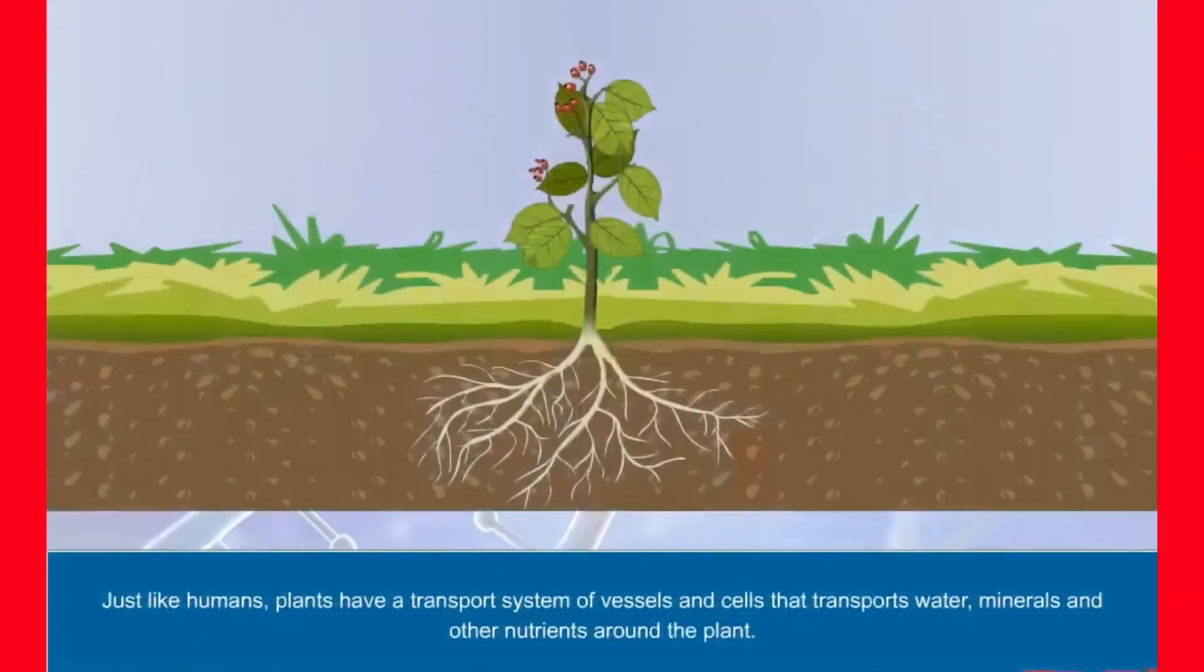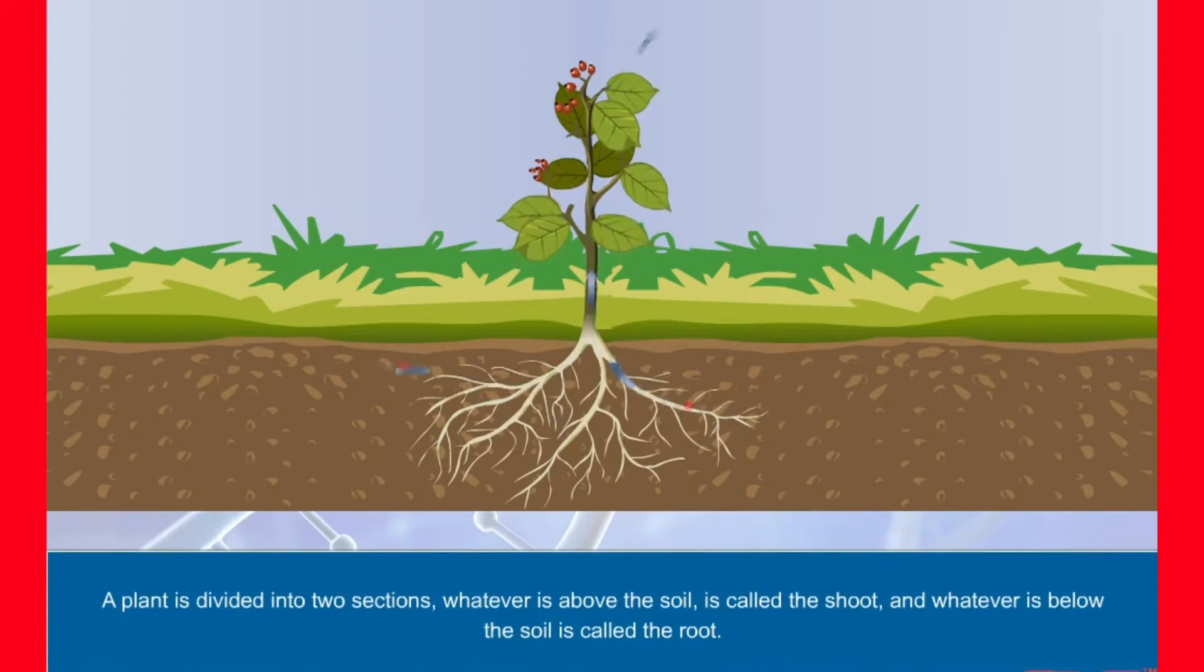Just like humans, plants have a transport system of vessels and cells that transports water, minerals and other nutrients around the plant. A plant is divided into two sections. Whatever is above the soil is called the shoot and whatever is below the soil is called the root.